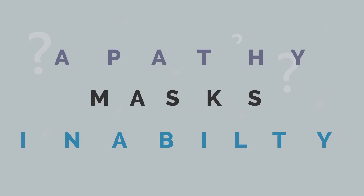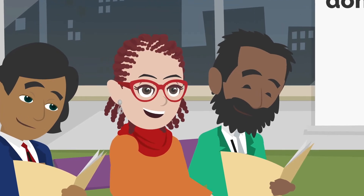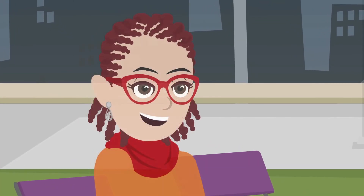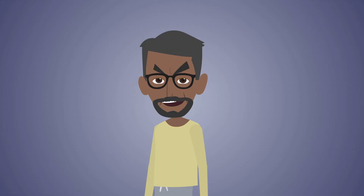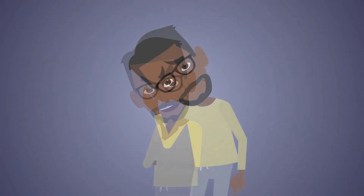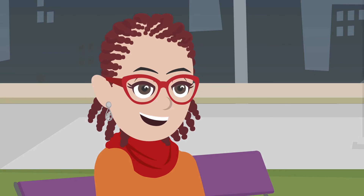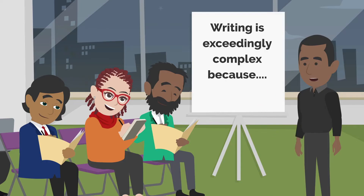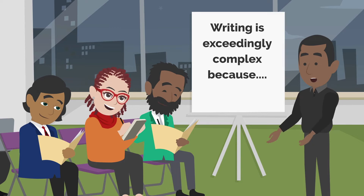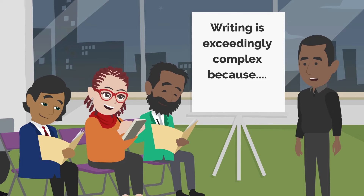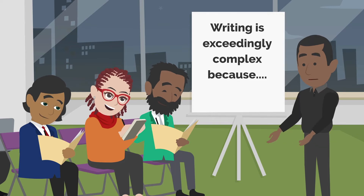Dr. Miller learned that students mask their inability with apathy. All of those years of students not completing assignments now had a different context. They didn't lack motivation — they lacked the ability to do some aspect of the assignment. Their apathy was just a facade that protected them from feeling the pain of failure. For her students, this meant not doing writing outlines. Dr. Miller also learned that writing is the most challenging type of academic work students are required to do, because it requires them to engage in three complex cognitive processes.